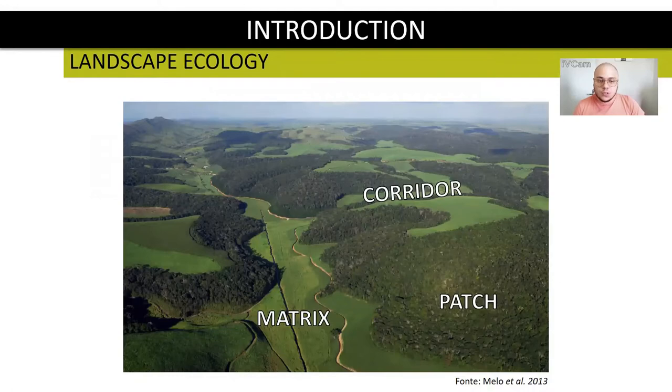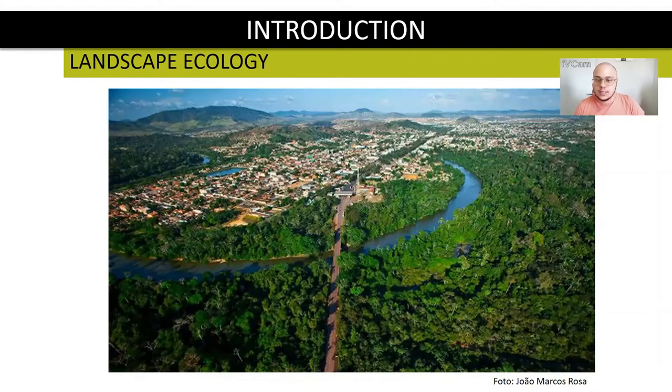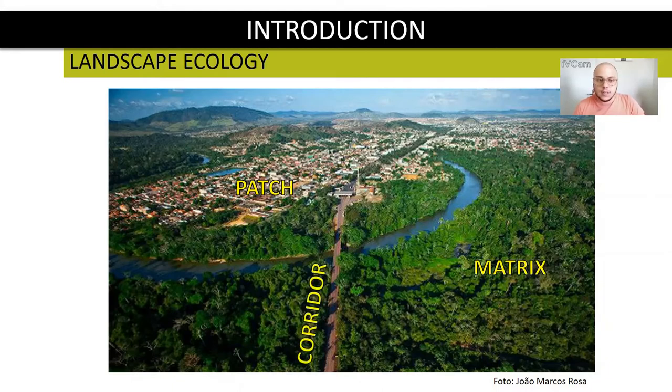In this case, those three elements are thought for a forest species, but the elements in the landscape can change according to the species that you are focusing. For humans, for example, the cities are the habitat, the matrix can be natural areas as forests, and the roads are corridors that allow the movement in the landscape.